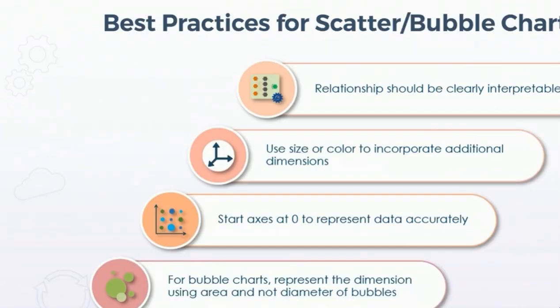There are some best practices for scatter and bubble charts. The relationship should be clearly interpretable. We should use size or color to incorporate an additional dimension. The starting axis should be at zero to represent data accurately. For bubble charts, represent the dimension using area and not diameter of the bubbles.